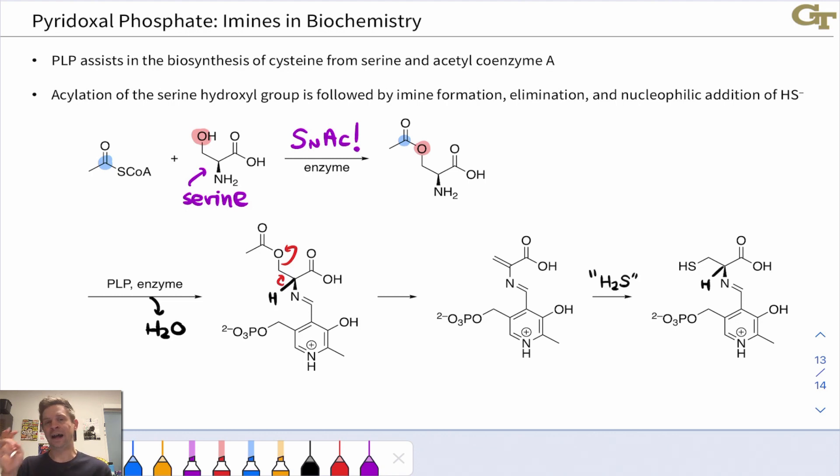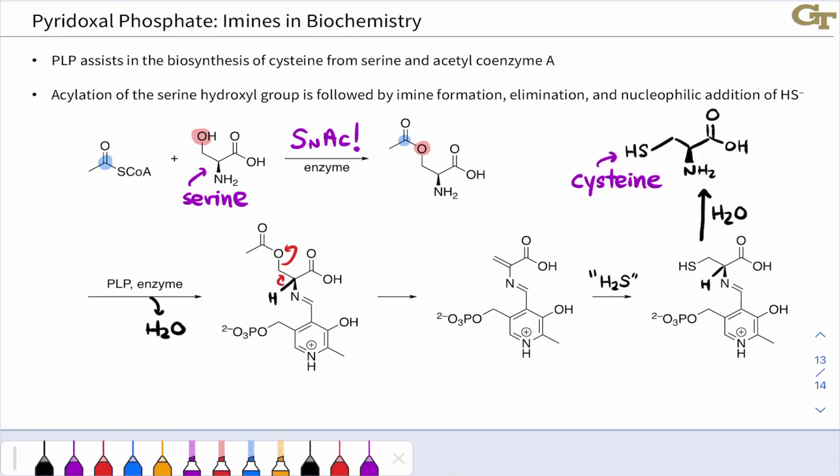Now something like H2S can come in and add to this electrophilic carbon. Notice it's a beta carbon, part of an alpha-beta unsaturated carbonyl functionality, and so it can add in there—that's a conjugate addition type of reactivity—and ultimately we get HS replacing HO in the original serine, if you like. So this is how cysteine is biosynthesized. After hydrolysis of this PLP imine, the net result being the replacement of OH in serine with SH in cysteine.